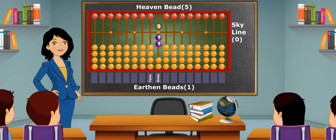To make 7, 1 heaven and 2 earthen beads meet at the skyline. That is, 5 heaven plus 2 earthen equals 7.